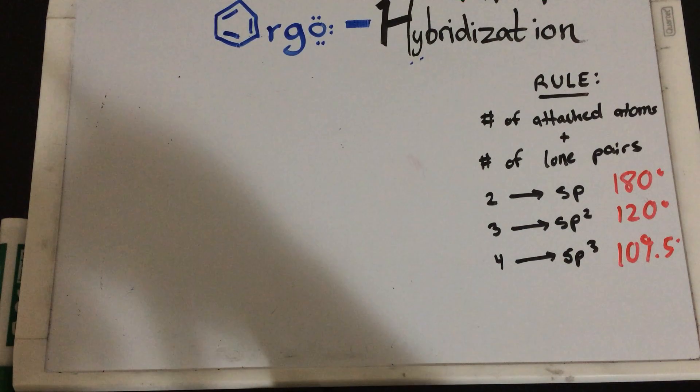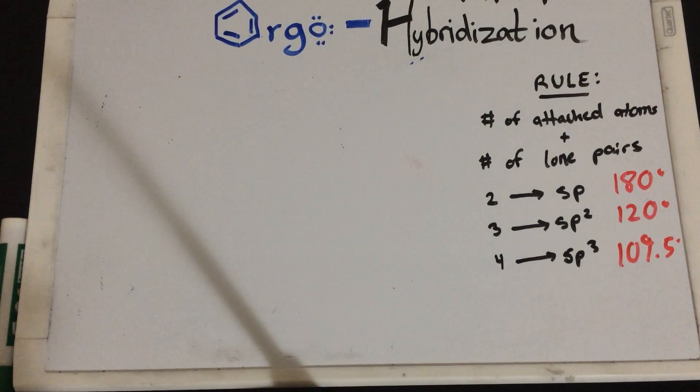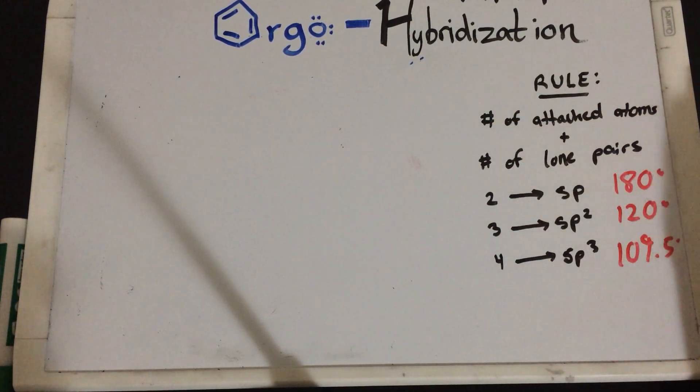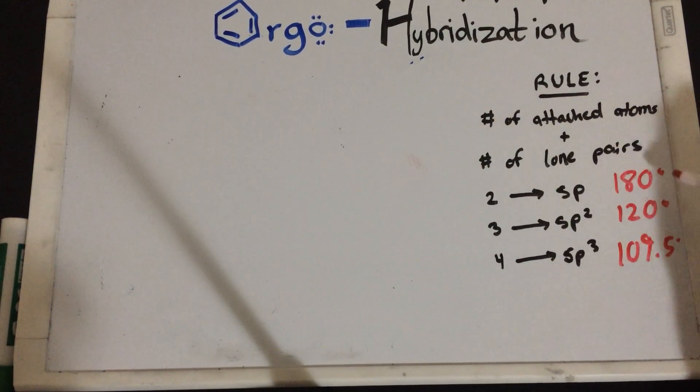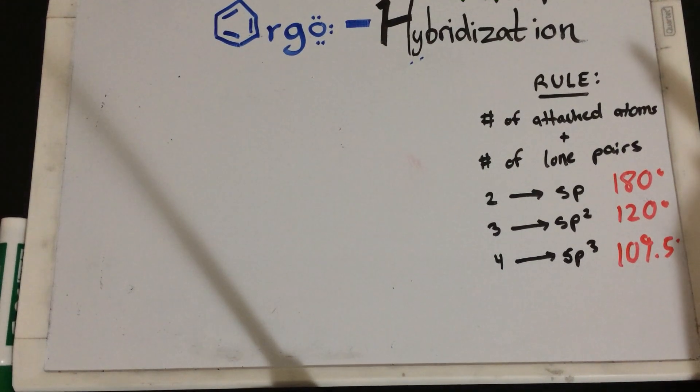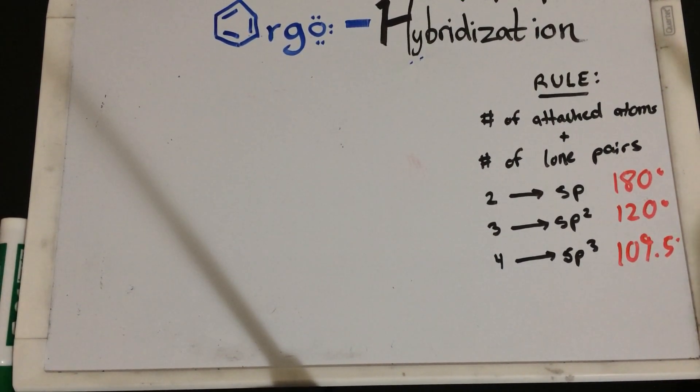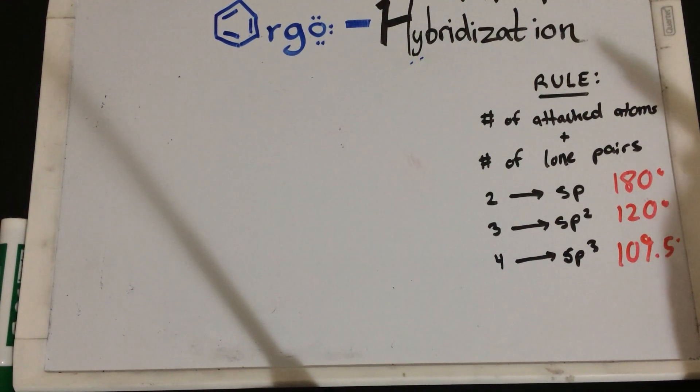And if you want to find the hybridization of any atom, whether it be oxygen or carbon, you just follow this simple rule: number of attached atoms plus number of lone pairs, and depending on what that is, it's SP, SP2, SP3, and so on. So, that's it for this video. If you guys have any questions, please leave it in the comment section below, and I'll see you guys next time. Thank you.